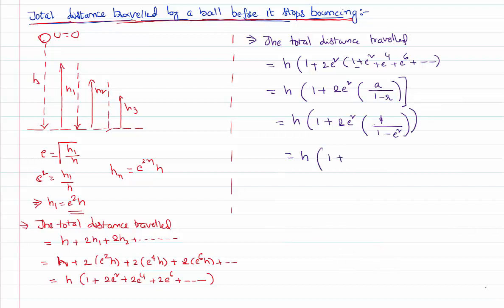h of 1 plus 2 e square by 1 minus e square. Simplifying it even further by taking LCM 1 minus e square: 1 minus e square plus 2 e square. So the total distance traveled by the body is h times 1 plus e square by 1 minus e square, where e is called coefficient of restitution which is a measure of nature of the collision.